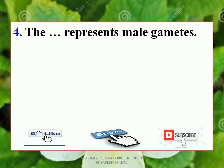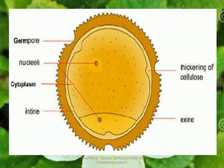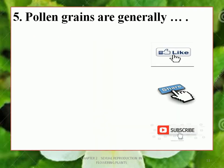Question 4: The DASH represents male gametes. Options: A. Pollen Grains, B. Pollen Disc, C. Pollen Tube, D. None of these. The correct option is A — Pollen Grains. Pollen grains represent male gametes. The structure of pollen grains contains two walls: the outer wall called exine and the inner wall called intine. Inside it contains cytoplasm with nuclei.